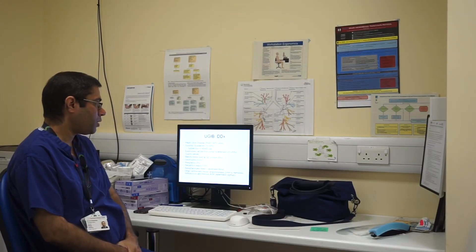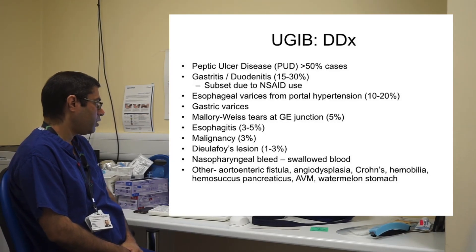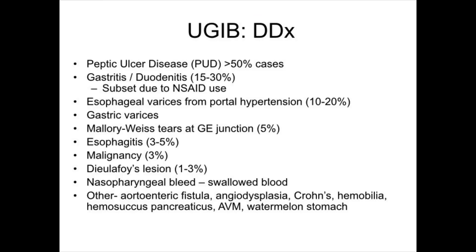When you see a patient with an upper GI bleed, there are differential diagnoses or potential causes — in more than 50% of cases it is due to peptic ulcer disease. This can be subdivided into gastritis, duodenitis, erosions, gastric ulcers, and duodenal ulcers. Oesophageal varices, on the other hand, are due to portal hypertension and account for 10-20% of presentations.